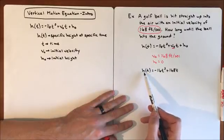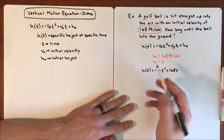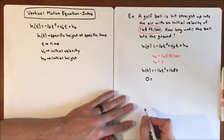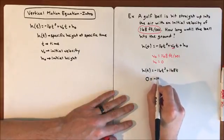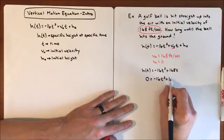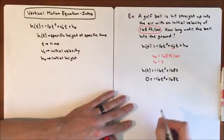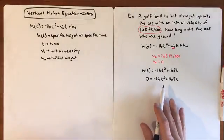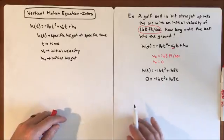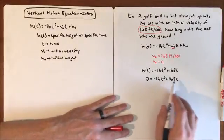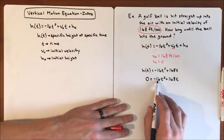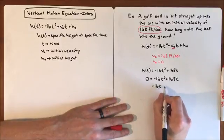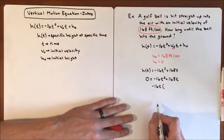The question is how long it takes for the ball to hit the ground. We're solving for t. When the ball hits the ground, the height is zero, so we substitute zero for H of T. That gives us 0 equals negative 16t squared plus 168t. To solve this, we're going to factor because it's equal to zero and use the zero product property. Both terms are divisible by t and by 16.